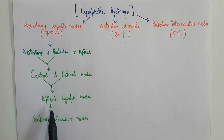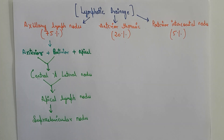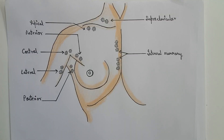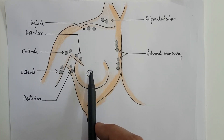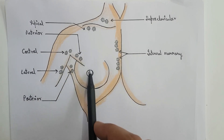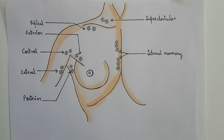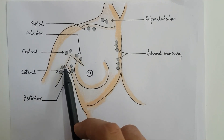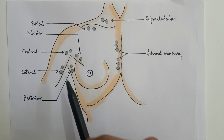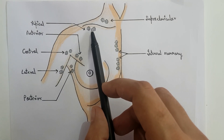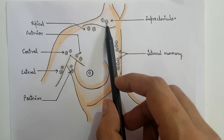From the apical lymph nodes the lymph finally drains into the supraclavicular nodes, and then it is drained into the veins. Now let's visualize this flow with a diagram. A large portion of lymph from the breast drains directly into the anterior, posterior, and apical groups of lymph nodes. From the anterior and posterior groups, the lymph travels to the central and lateral groups. Finally, the lateral and central groups drain into the apical, and the apical drains into the supraclavicular lymph nodes.